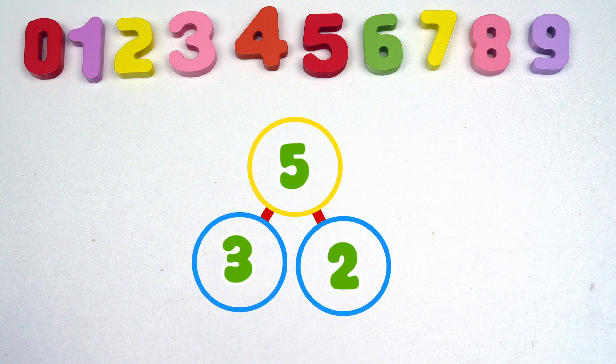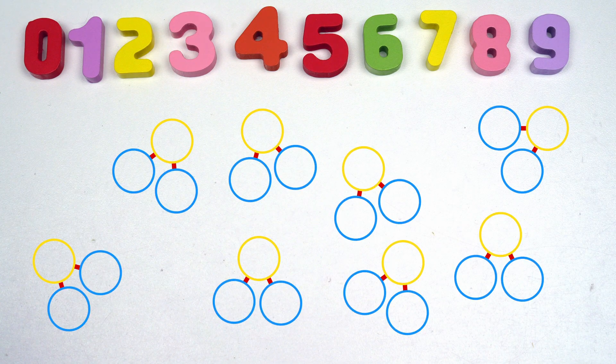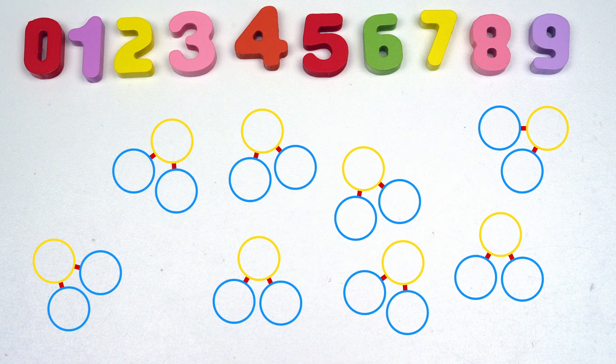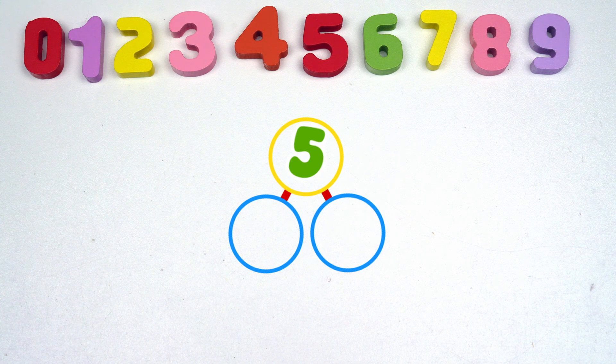But guess what? A number doesn't have just one number bond. It can have many. If we look at the number five again, it can be made up in lots of different ways. Let's get some blocks and I'll show you.